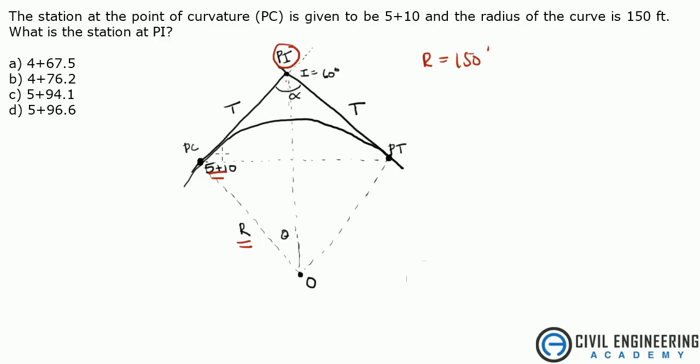We're given, well we're not given, but you should see the two tangents. We're also given an interior angle of 60 degrees. So, given these variables, you know right off the bat that we're dealing with a horizontal curve.